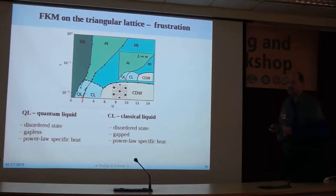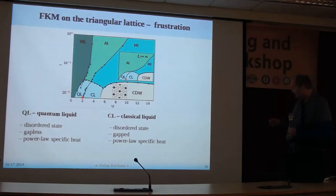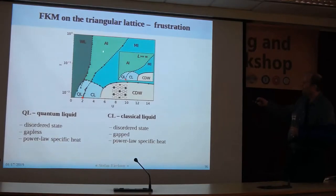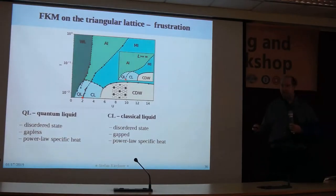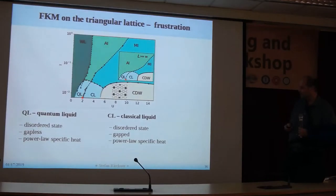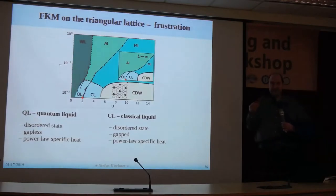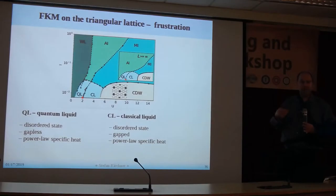The conclusion is: these are liquid states. What's the difference between the QL phase and the CL phase? The QL phase is coupled to conduction electrons because it sits in the region where we have the Anderson insulator, and that is reflected in the specific heat having a different power law than the CL phase, where we have a fully gapped system. So these two states are disordered: one has gapless excitations because of coupling to fermions; the other is fully gapped and classical.